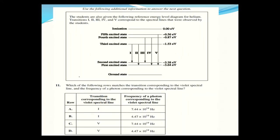The next question asks which transition corresponds to violet light and what frequency that photon has. I'll use c = λf and convert — I know violet light's wavelength better than its frequency. Taking the speed of light divided by 7.44 × 10¹⁴ Hz gives roughly 403 nanometers, which is violet light.